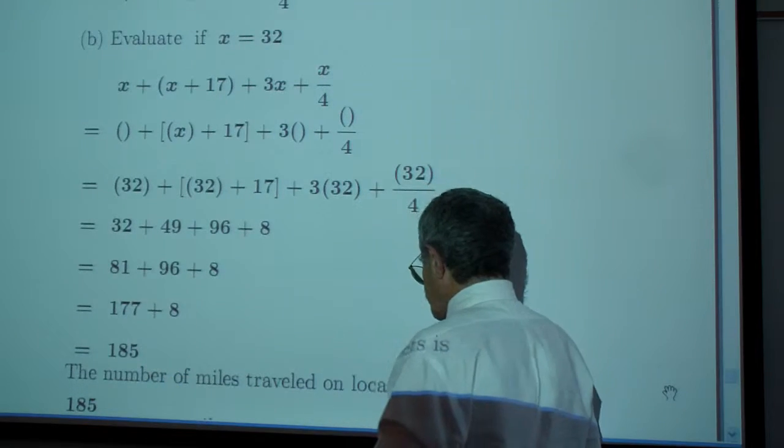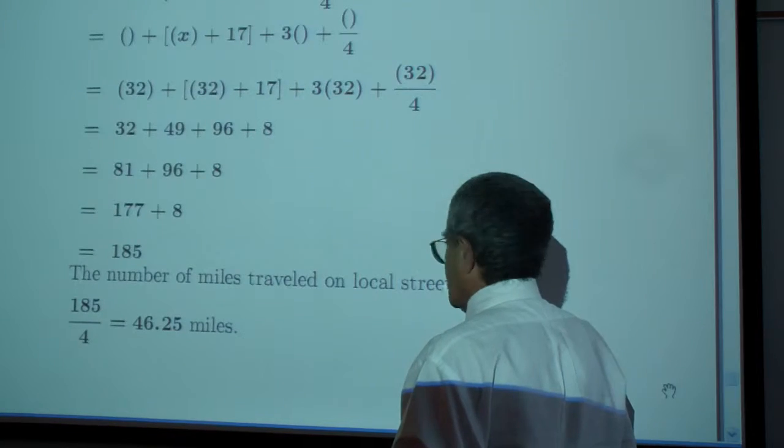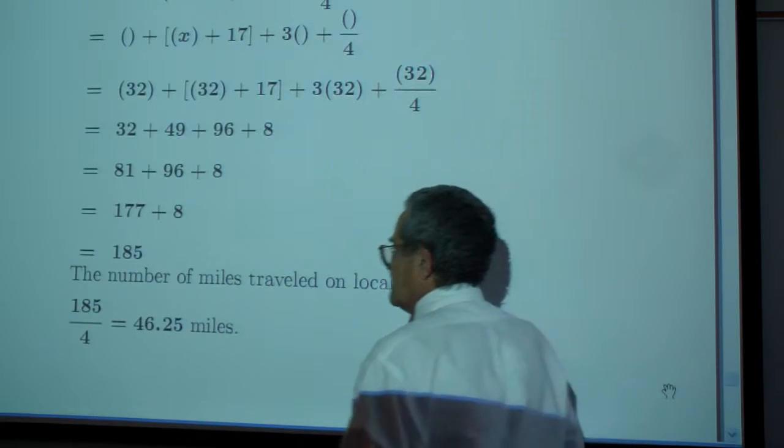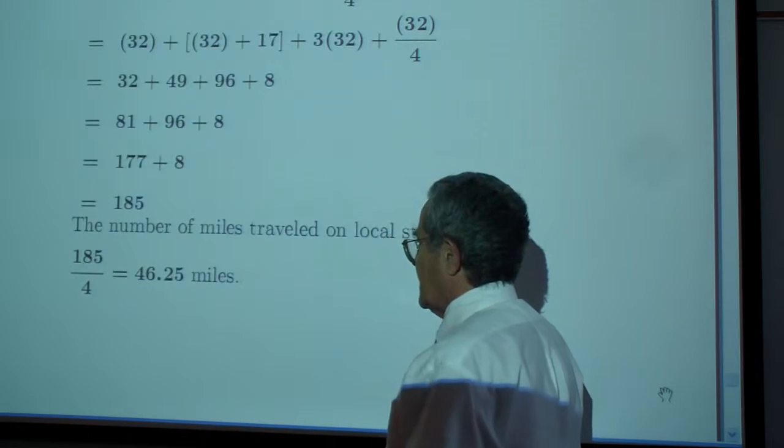So the total number of miles on local streets is that number divided by 4, or apparently 46 and a quarter miles.